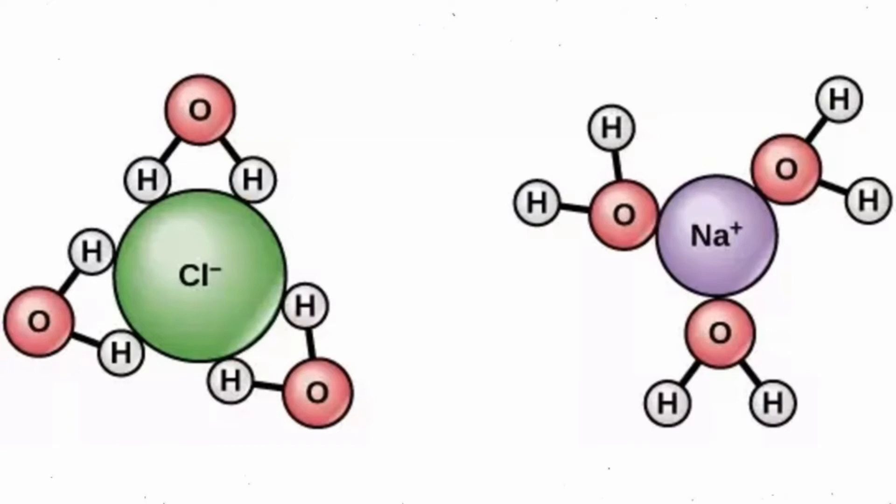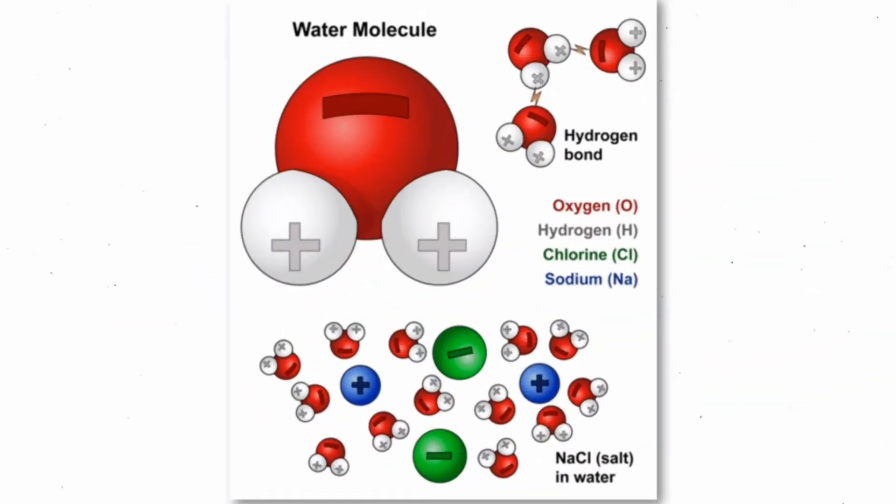Something similar will happen with the chloride anion as well. Since it has a negative charge, it's going to be attracted to the partially positive hydrogen ends of the water molecules, and vice versa. So now instead of the oxygen ends facing the ion, the hydrogen ends will face the chloride anion. Once again, since the oxygen has a partially negative charge, it will repel from the chloride ion and continue to face the sodium.